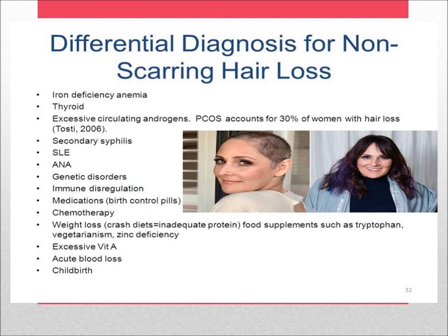Differential diagnosis for non-scarring hair loss: reasons may include iron deficiency anemia, thyroid disorders, acute blood loss, childbirth, medications, genetic disorders, immune dysregulation, systemic lupus erythematosus, secondary syphilis, and weight loss.